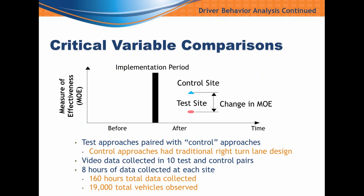The vast majority of the intersections were already improved by the time we got on board with the study, so a before-and-after comparison of driver behavior wasn't possible — once the approaches were modified, we lost the before period. We had to go with a test and control study design. We wanted the control sites to be as similar to the paired test site as possible, with the exception of the treatment — we controlled for ADTs, laneage, and other geometric characteristics. The control sites had the traditional right-turn lane design, whereas the test sites had the modified lane design. We collected video data — eight hours at each of the sites — ending up with a total of 160 hours of data and over 19,000 vehicles observed.